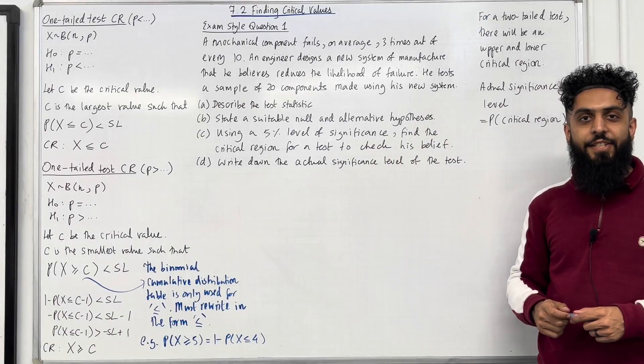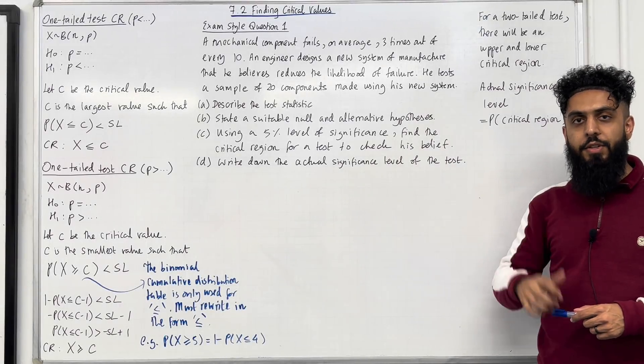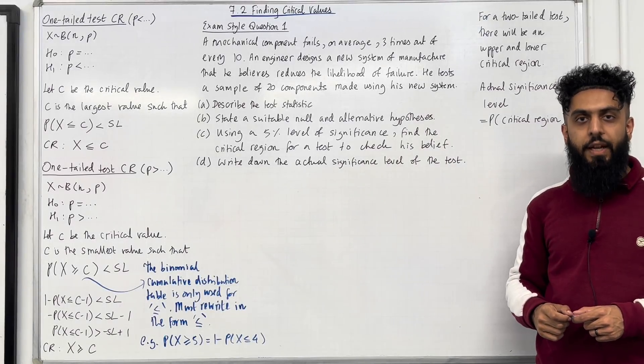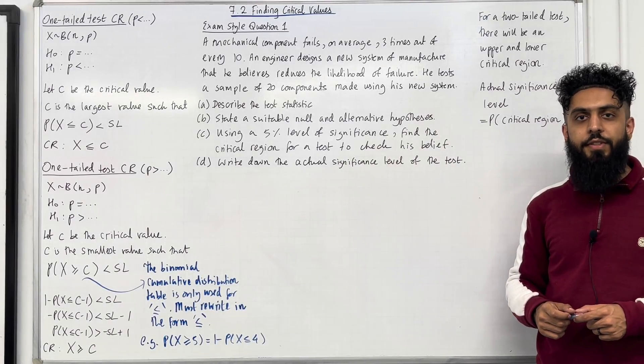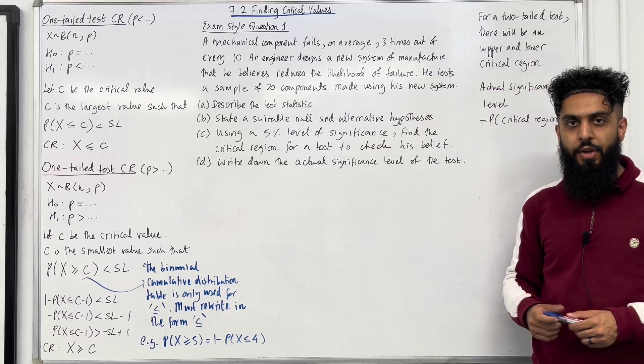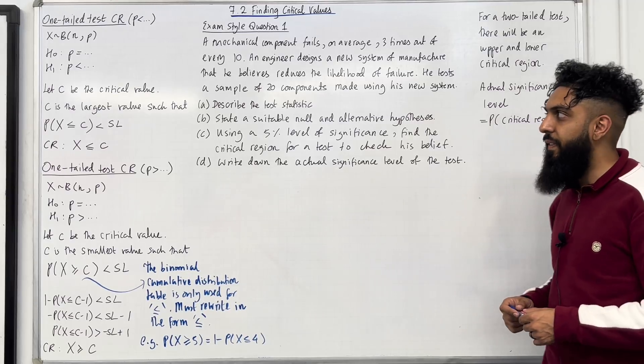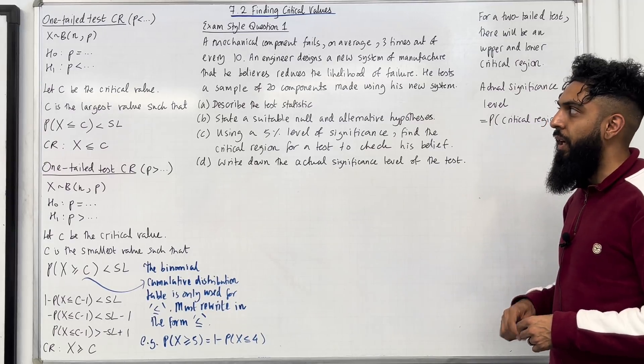Welcome back. In this YouTube video, I'll be looking at 7.2, finding critical values. 7.2 represents Chapter 7, Section 2 of the Pearson A-level Applied Mathematics 1 textbook. Let's go through the key facts of this section.